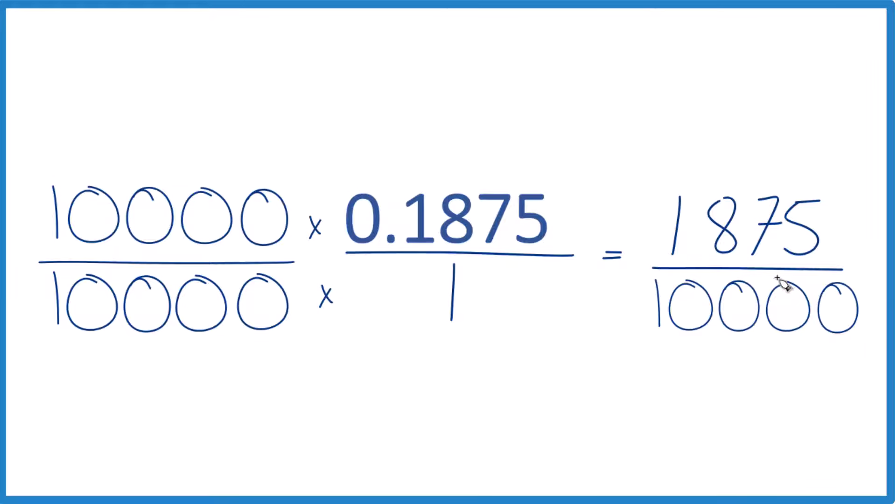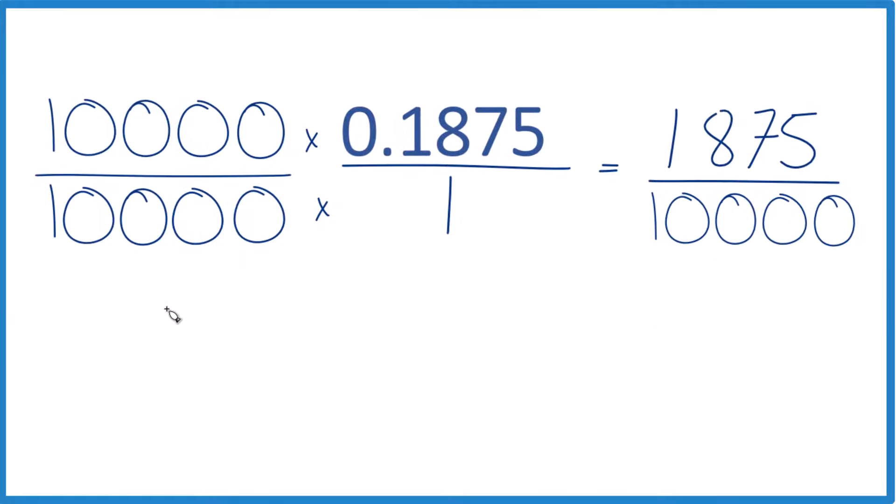All whole numbers, we just need to simplify. Looks like 25 would go into 1,875, and it goes in there 75 times. And then 25 goes into 10,000 400 times.